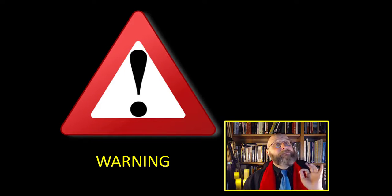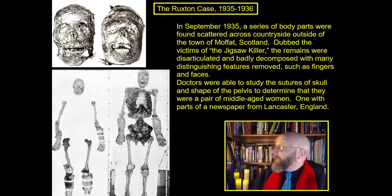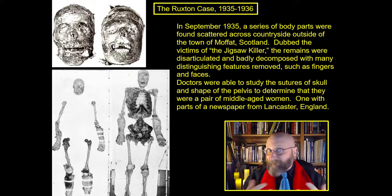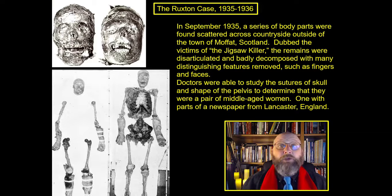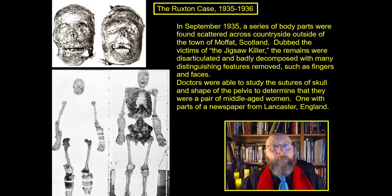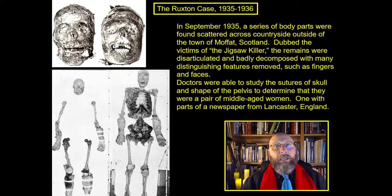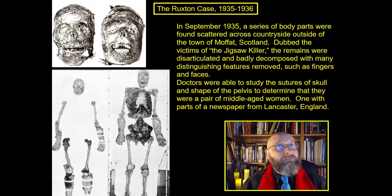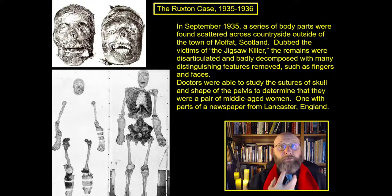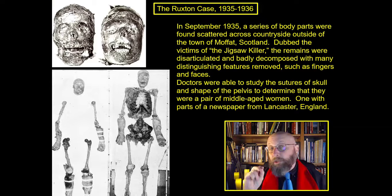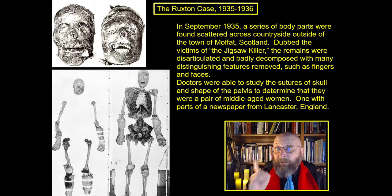We're going to start by looking at the victims of the jigsaw killer. The jigsaw killer comes out of the Ruxton case, a very famous forensic case from 1935 to 1936. Starting in September of 1935, outside a town in Scotland called Moffat, they found scattered human remains in a series of ravines and creeks. The remains were badly disarticulated and decomposed. Many distinguishing features had been removed: the fingertips were gone to remove fingerprints, teeth were removed to prevent dental identification, and faces were removed to prevent visual identification.